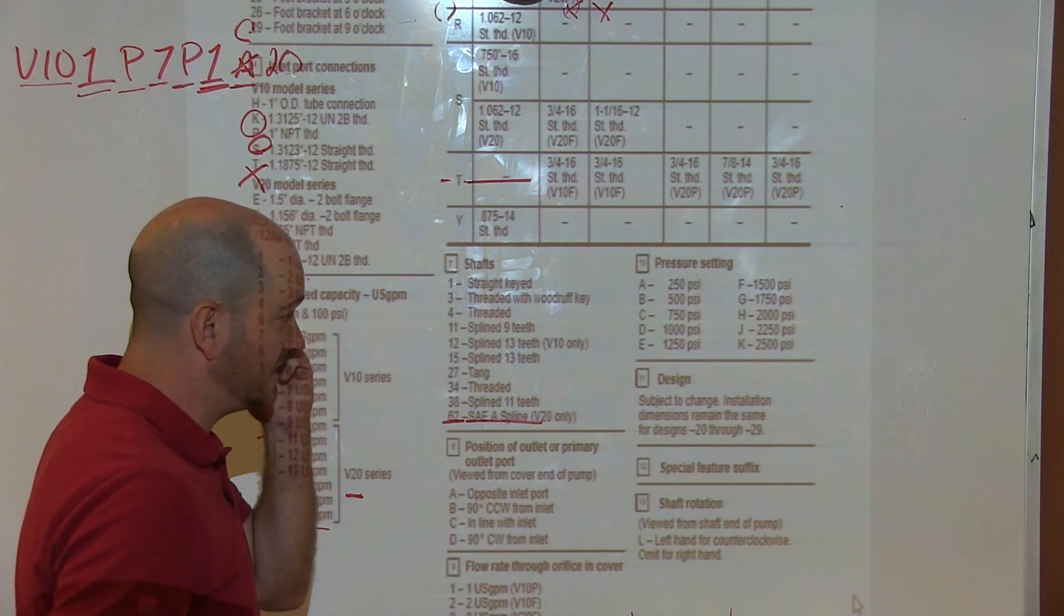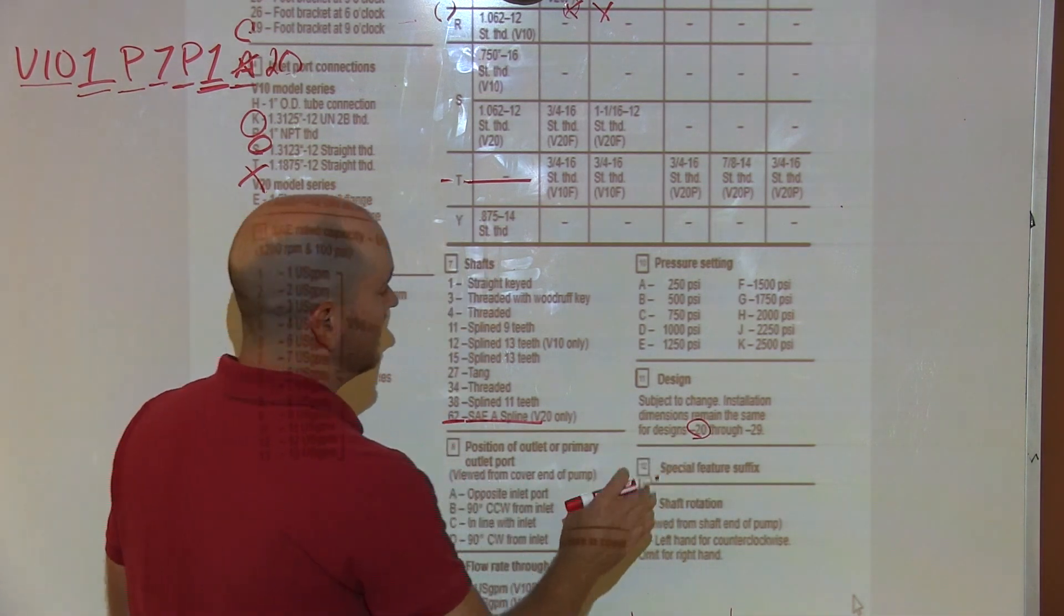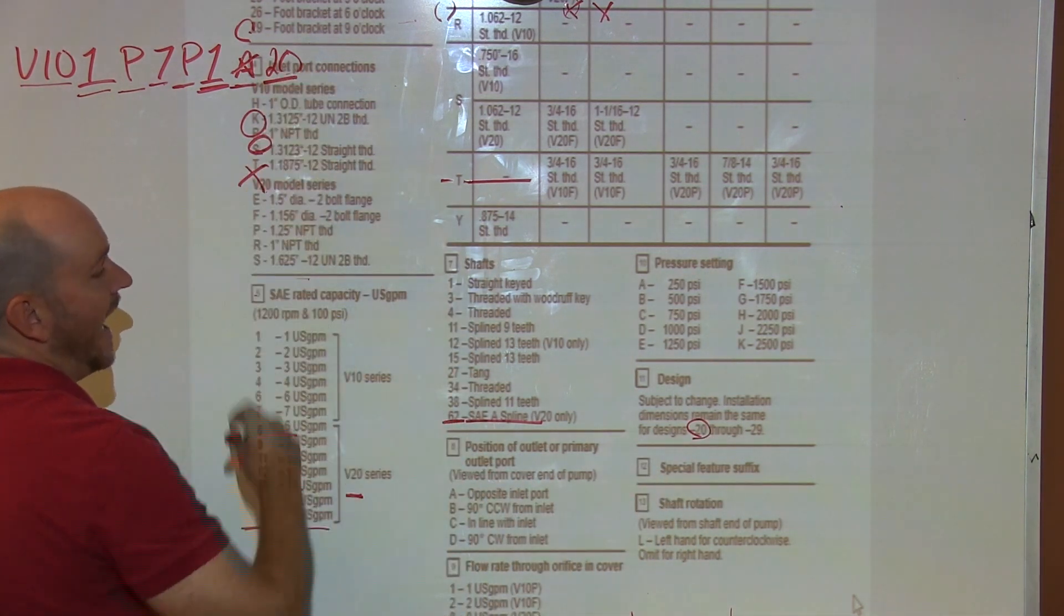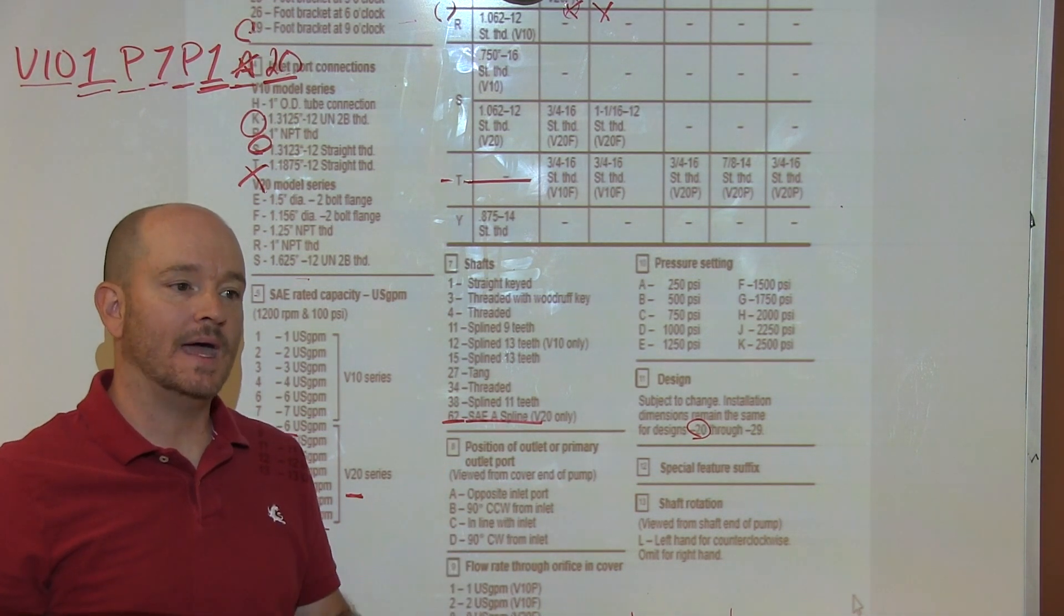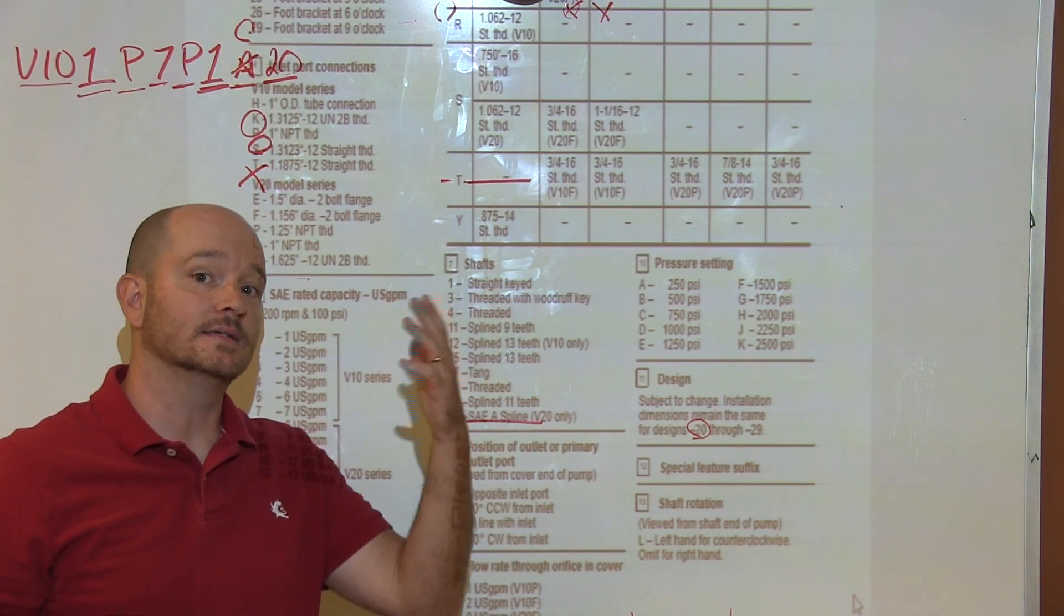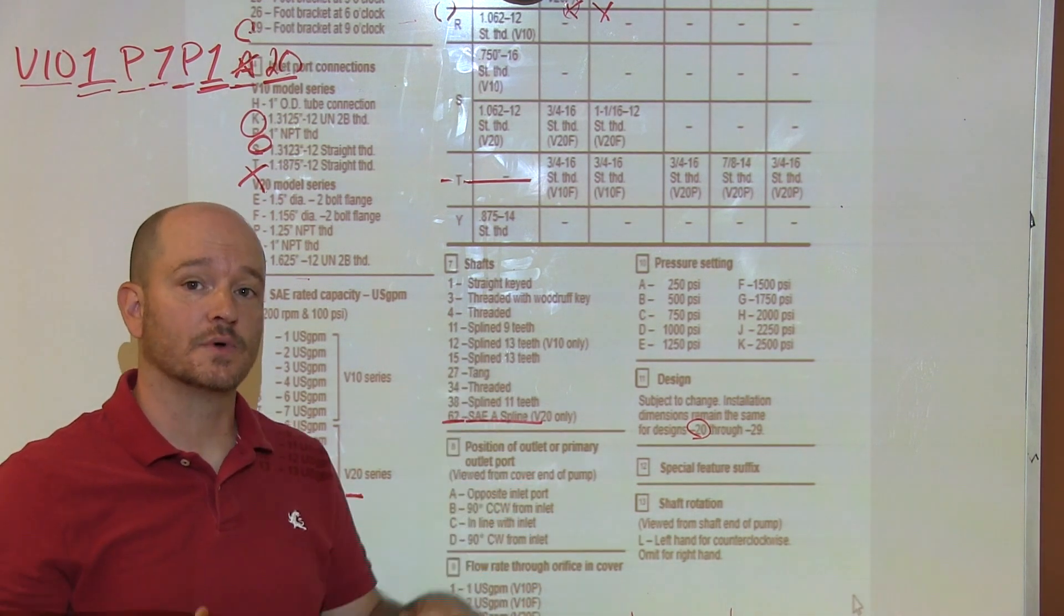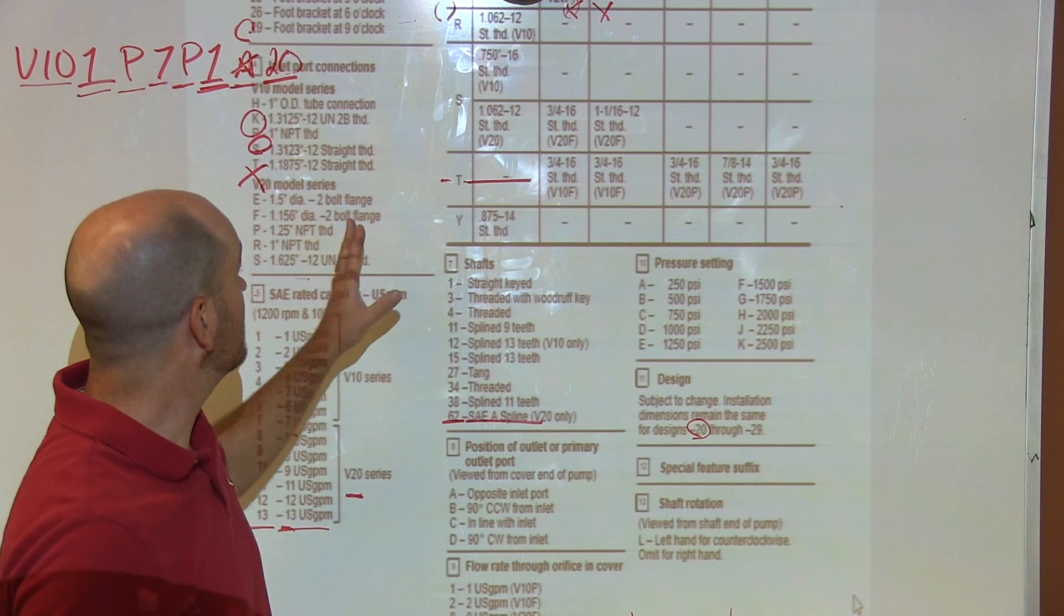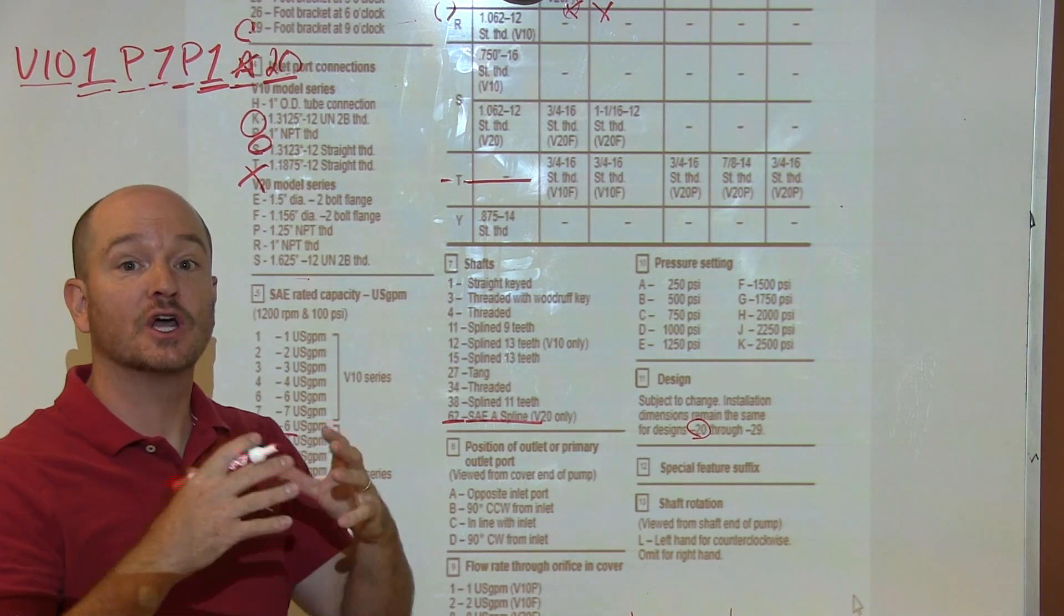Then we look at 11, and this is for design. It says 'subject to change, installation dimensions remain the same for designs 20 through 29.' This model number in particular has to do with how they've changed the design over time. So when you read the manual—let's say in later designs it's this, in earlier designs you have to watch out for this—as you read through the model number, this is a breakdown of how we would go through and decode, if you will, the model number of a hydraulic pump.